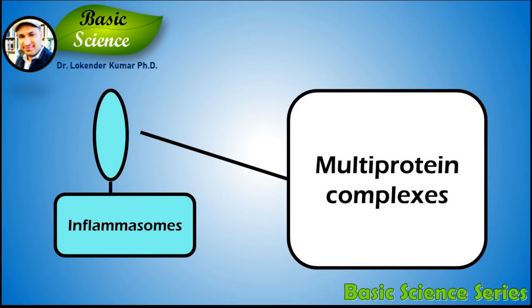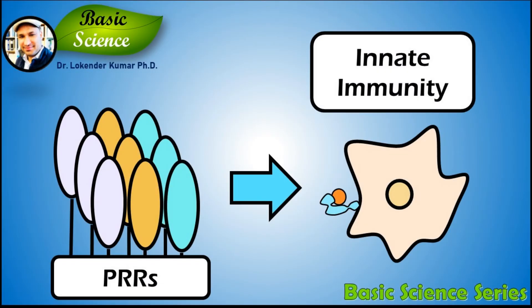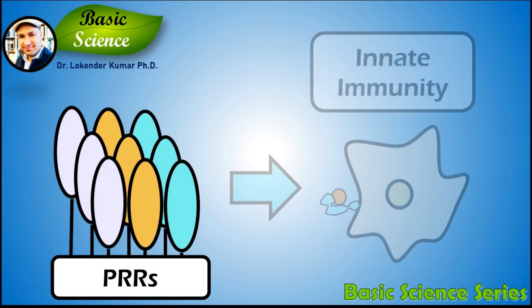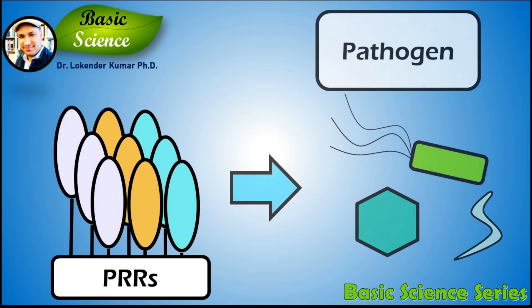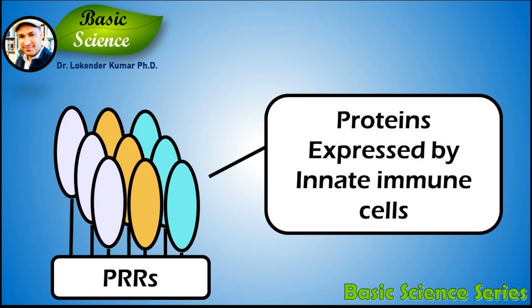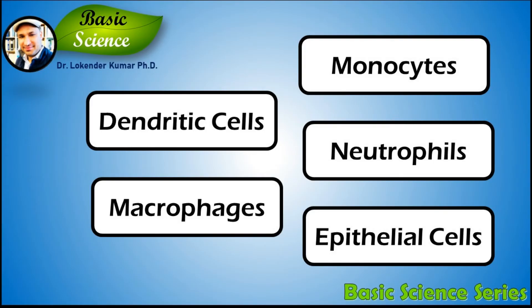The inflammasomes are multi-protein complexes that help to detect PAMPs and DAMPs. Pattern recognition receptors play a crucial role in the proper function of the innate immune system. PRRs are germline encoded host sensors which detect molecules typical for pathogens. They are proteins expressed mainly by cells of the innate immune system such as dendritic cells, macrophages, monocytes, neutrophils, and epithelial cells.